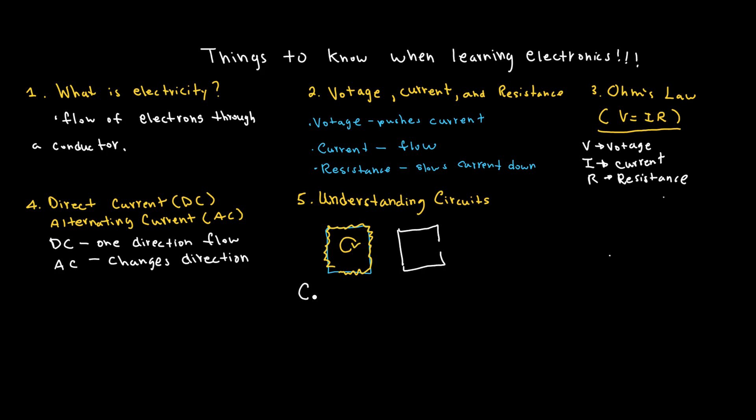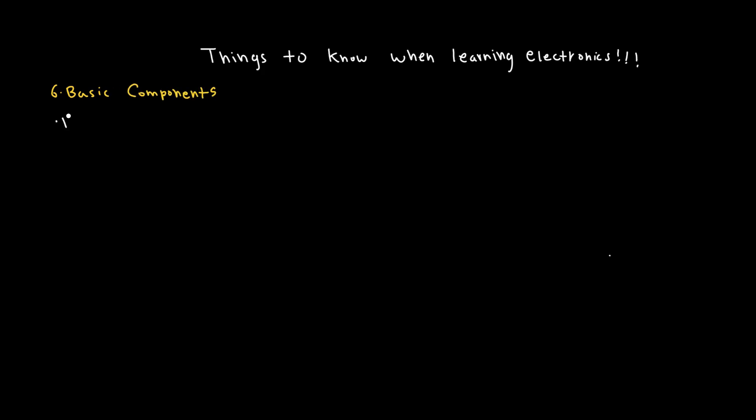You need to learn basic components. Learn about resistors, which limit current. Capacitors, which store and release energy. Diodes, which allow current in one direction. LEDs—a light that only turns on one way. And learn about transistors, which act like a switch or amplifier.